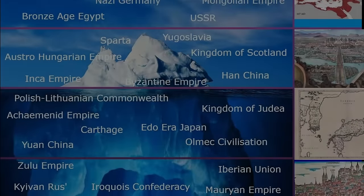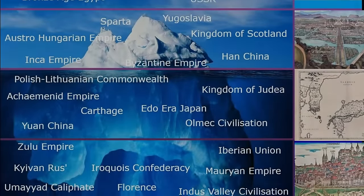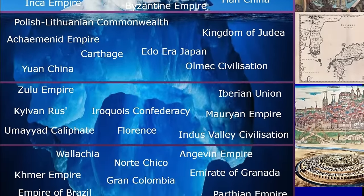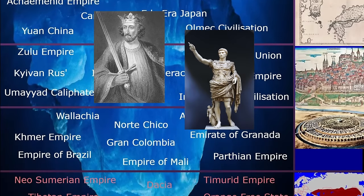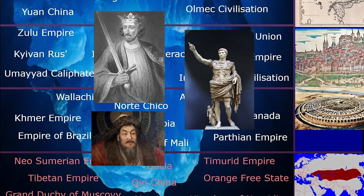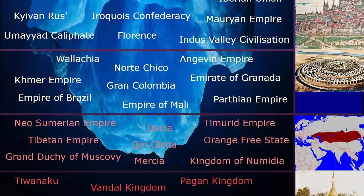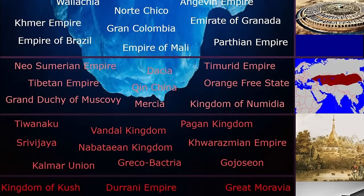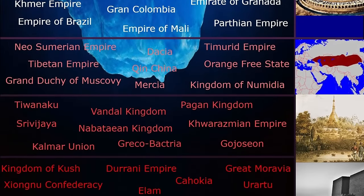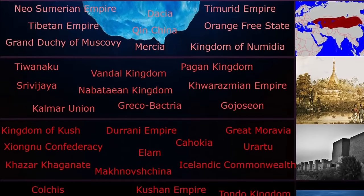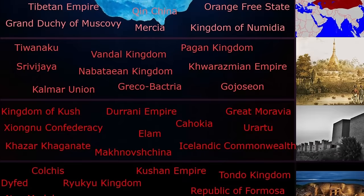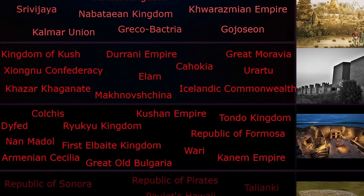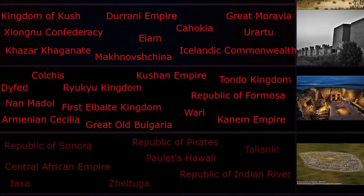Empires — essentially groups of states that have formed together under a ruler or emperor. There are well-known ones such as the Roman Empire, British, Mongol, and more, but there are also numerous ones that are scarcely talked about as well. Today we will be going through the Empire Iceberg, where we will start with the more well-known empires and gradually talk about more and more obscure ones as we go down. Now let's get into it.